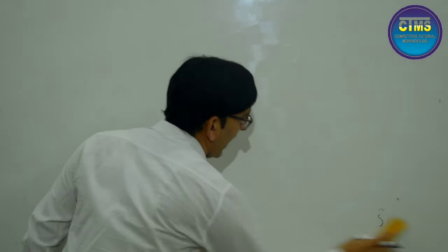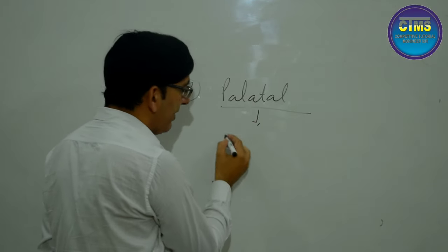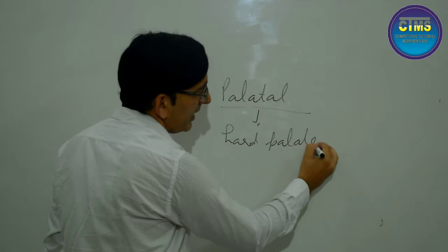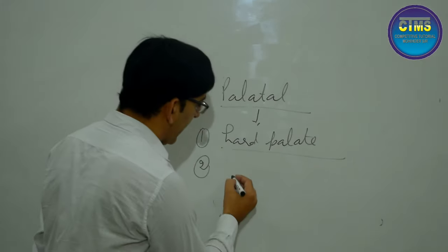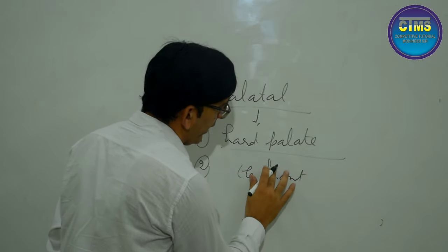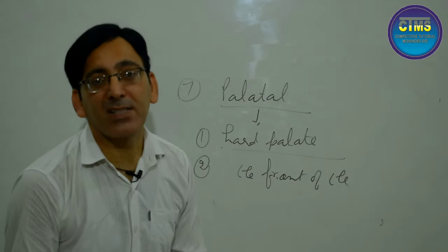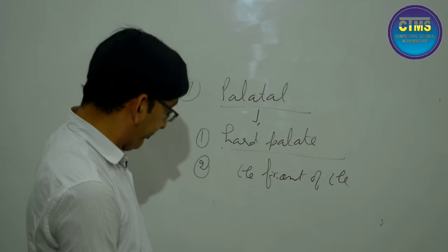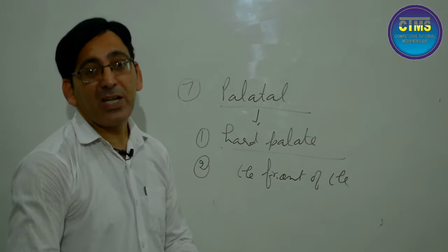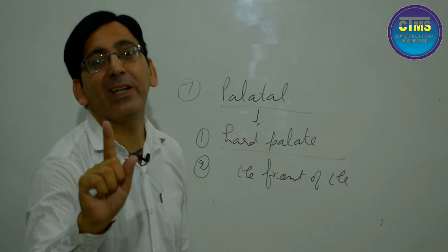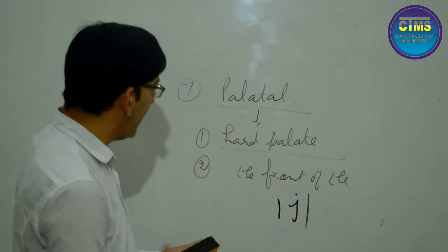The seventh category is called palatal. Palatal is the adjective of the hard palate, so the passive articulator is the hard palate. The part of the tongue opposite the hard palate is the front of the tongue, which is the active articulator. There is only one palatal sound in English, and that is /j/, as in the word 'young'.